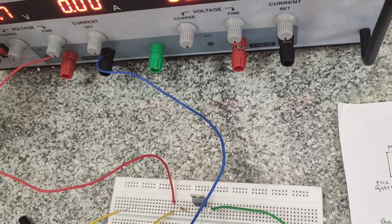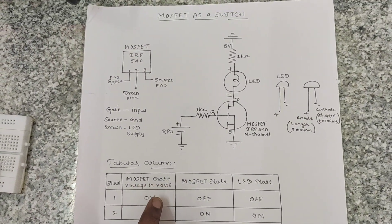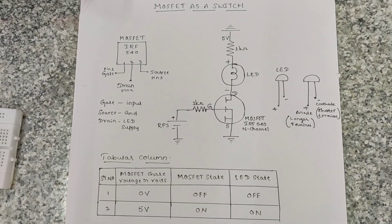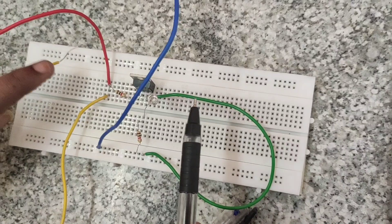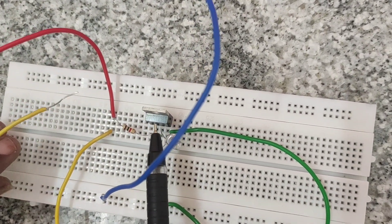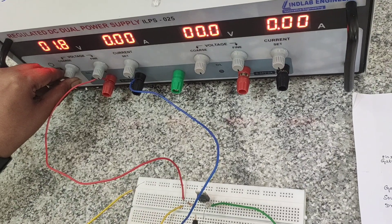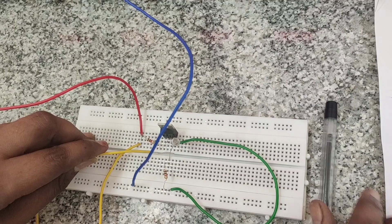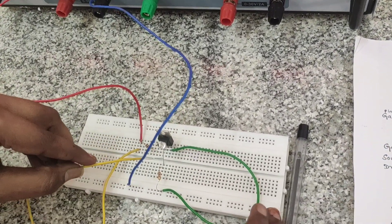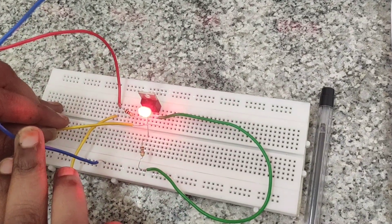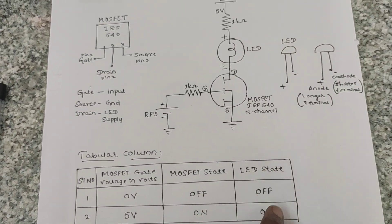Switch on the supply. As we can see in the tabular column, when the MOSFET gate voltage is 0V, the MOSFET state is OFF and the LED state is also OFF. The threshold voltage of this MOSFET is minimum 2V and maximum 4 to 5V. If we give 2V it will conduct and the LED will turn on. If we increase up to 5V, the MOSFET acts as a switch and the MOSFET state is ON, so the LED state is also ON.